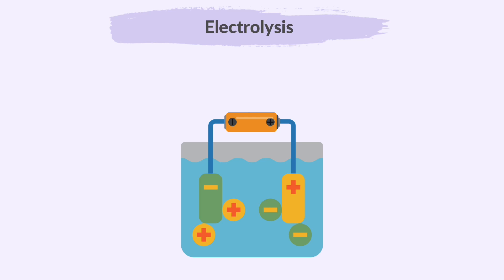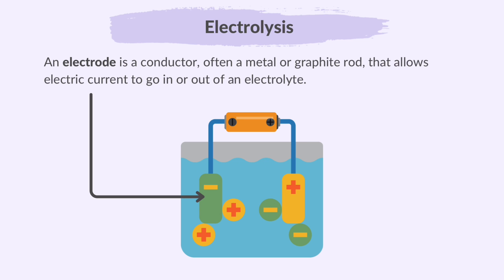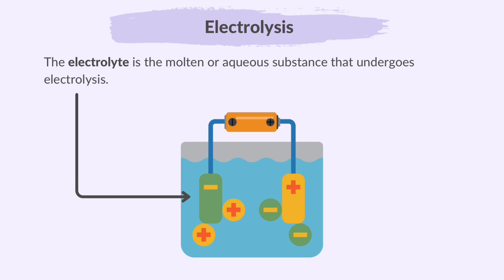Let's look at a simple electrolytic cell. This is an electrode. An electrode is a conductor, often a metal or graphite rod, that allows electric current to go in or out of an electrolyte. The electrolyte is the molten or aqueous substance that undergoes electrolysis.